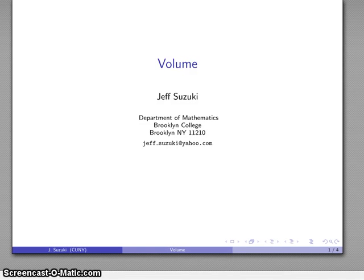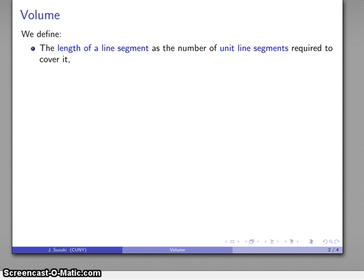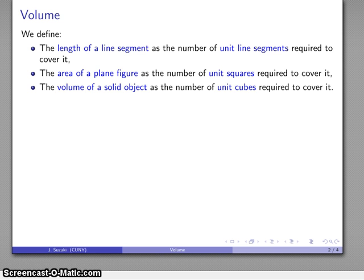Another quantity of interest is the volume of a three-dimensional object. And so just as a recap, we've defined the length of a line segment as the number of unit line segments required to cover it. We've defined the area of a plane figure as the number of unit squares required to cover it. And so we're going to define the volume of a solid object in the same way. It's going to be the number of unit cubes that are required to cover it.